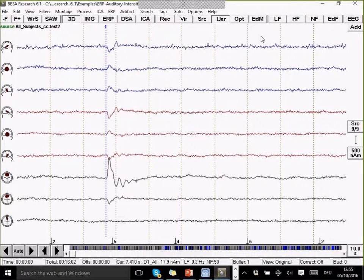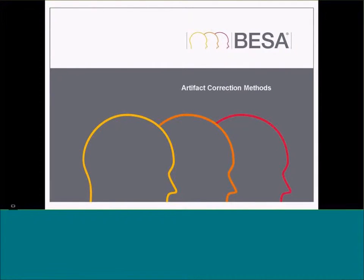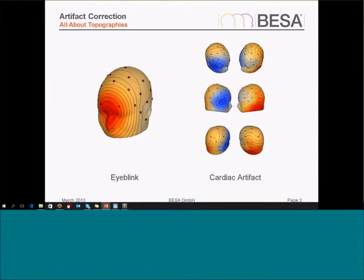Now I'm going to quickly talk about artifact correction, because it's another important aspect in data analysis. Artifact correction is something you usually do quite early on in data processing, but now that we've understood some of the principles, we can talk about the implications of different methods more easily. Basically, it's all about topography. We have eye blinks, cardiac artifacts, and potentially other artifacts — at least if they are not electrode artifacts, they are characterized by one stable topography over the recording, and we want to get rid of them.